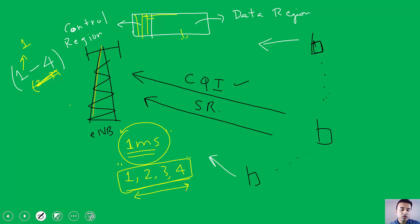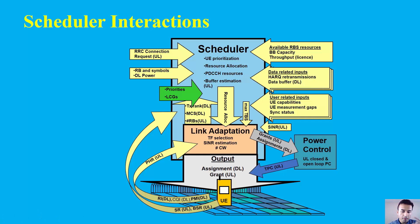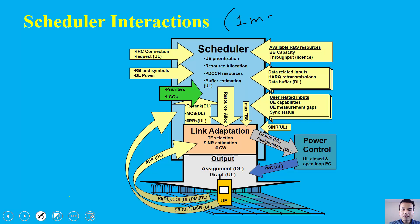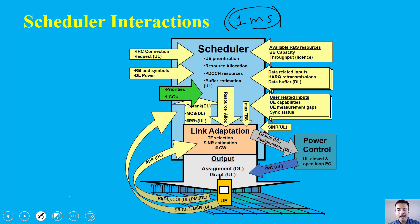Based on user inputs such as CQI reports and scheduling requests, the scheduler makes its decision. After every one millisecond, the scheduler checks how many resources are available, what reports are coming back from the UE, how many users are waiting, what PDCCH resources are available, and which user has higher priority. Taking all these factors into account, the scheduler decides every millisecond how many OFDM symbols to allocate for the control region versus the data region.